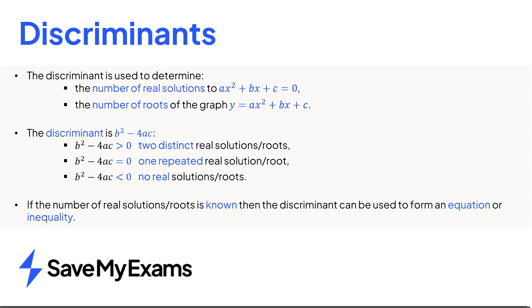If the number of real solutions or roots is known, then a discriminant can be used to form an equation or an inequality to find the value of any unknown coefficients of the quadratic.